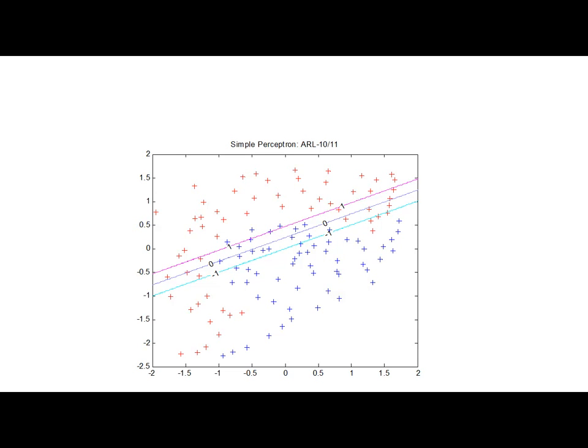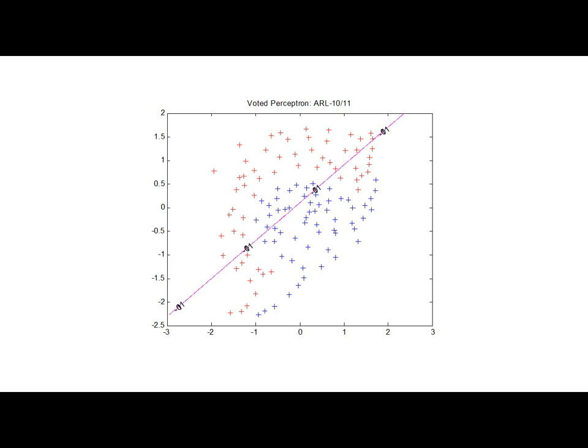This is a result of using the linear basis functions. Both the perceptron and voter perceptron will fail because we are using linear basis functions and the data set is not linearly separable. But if we use a certain high-degree polynomial, we can obviously separate these two classes using the simple perceptron and voter perceptron learning algorithm.